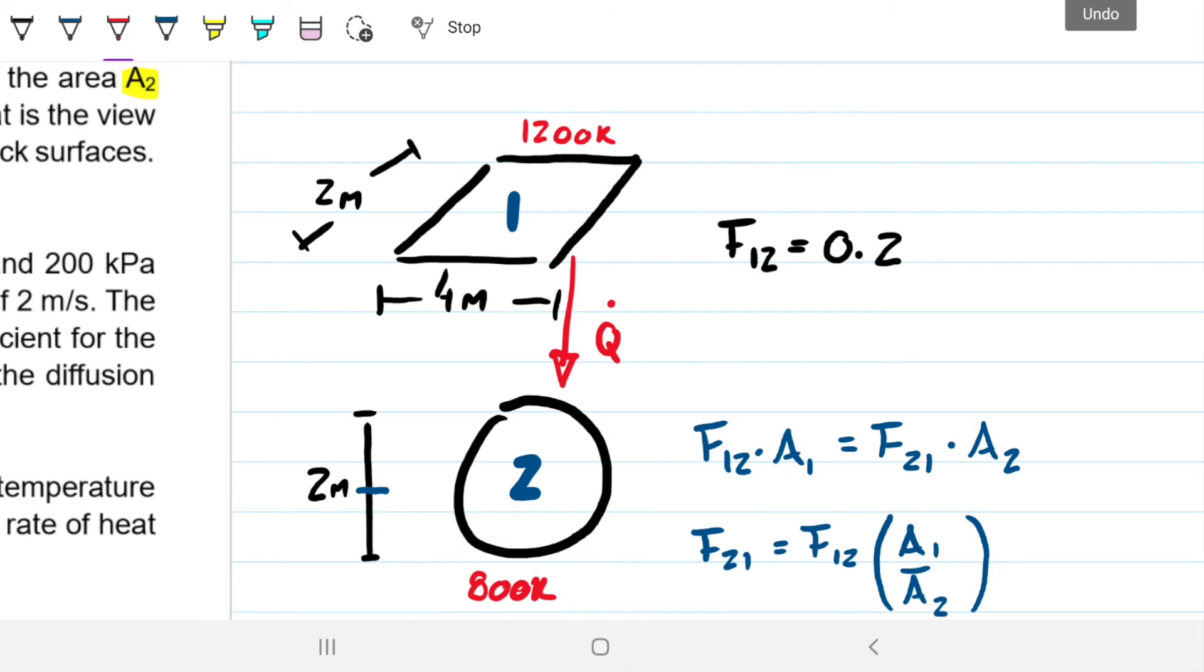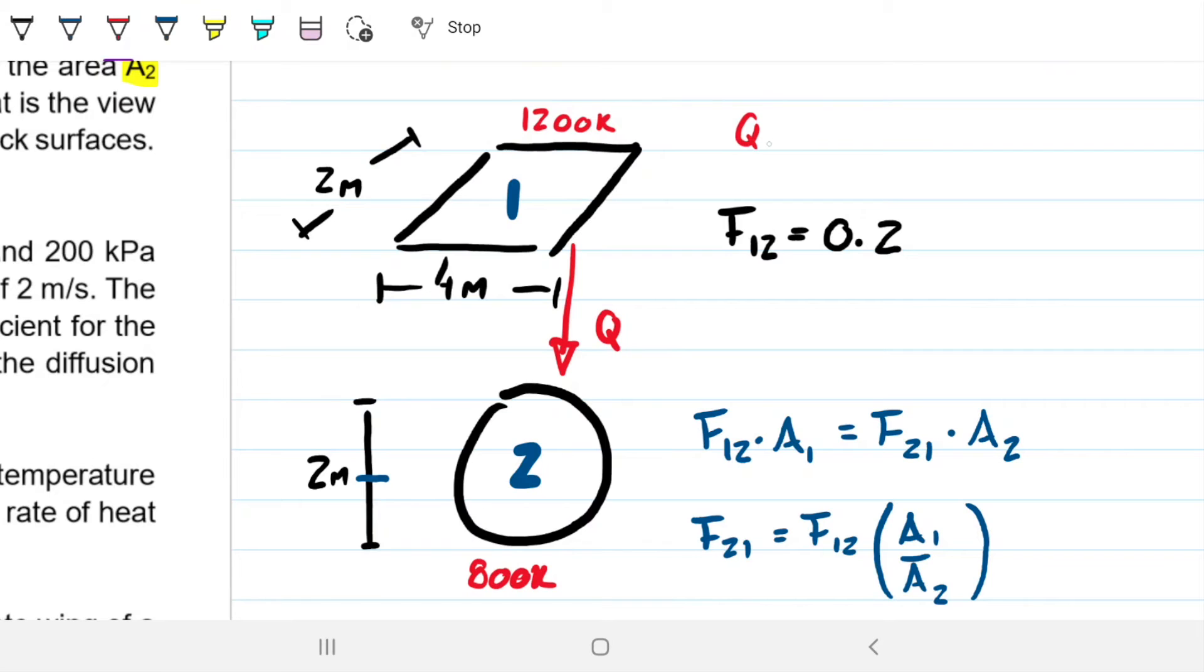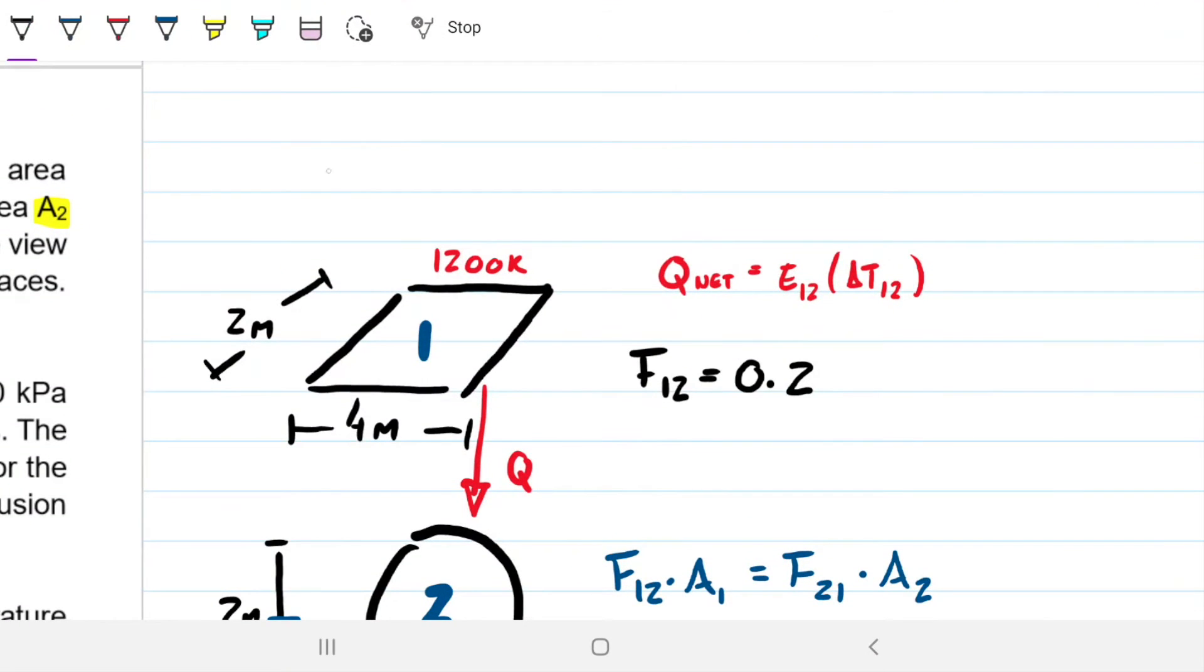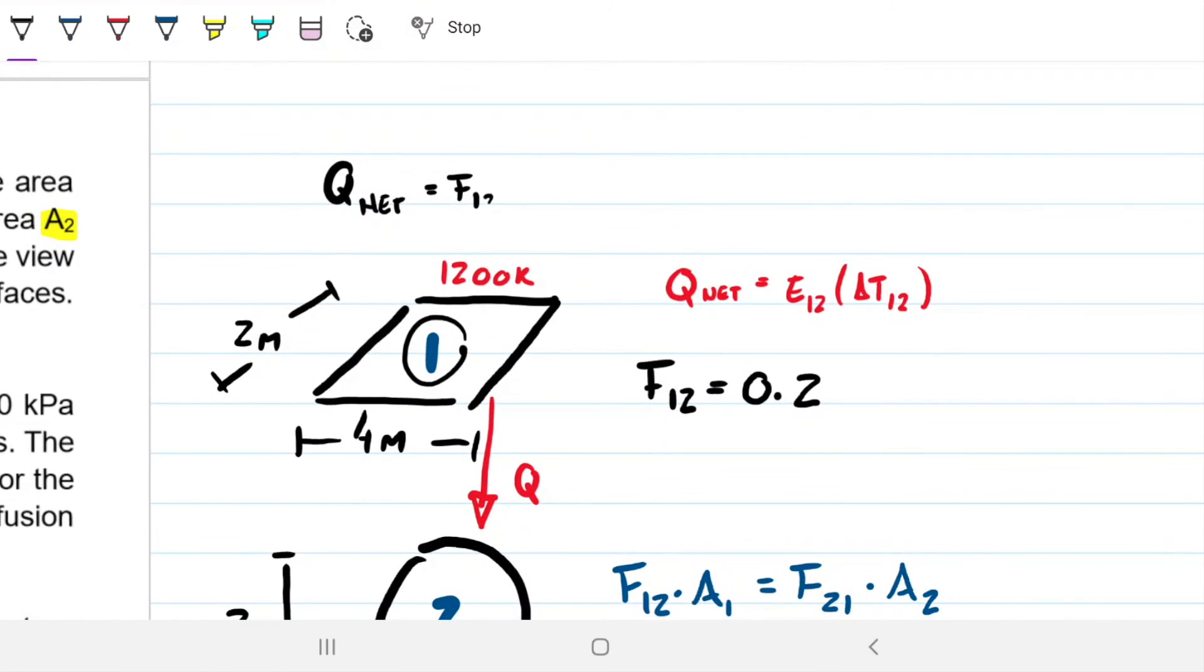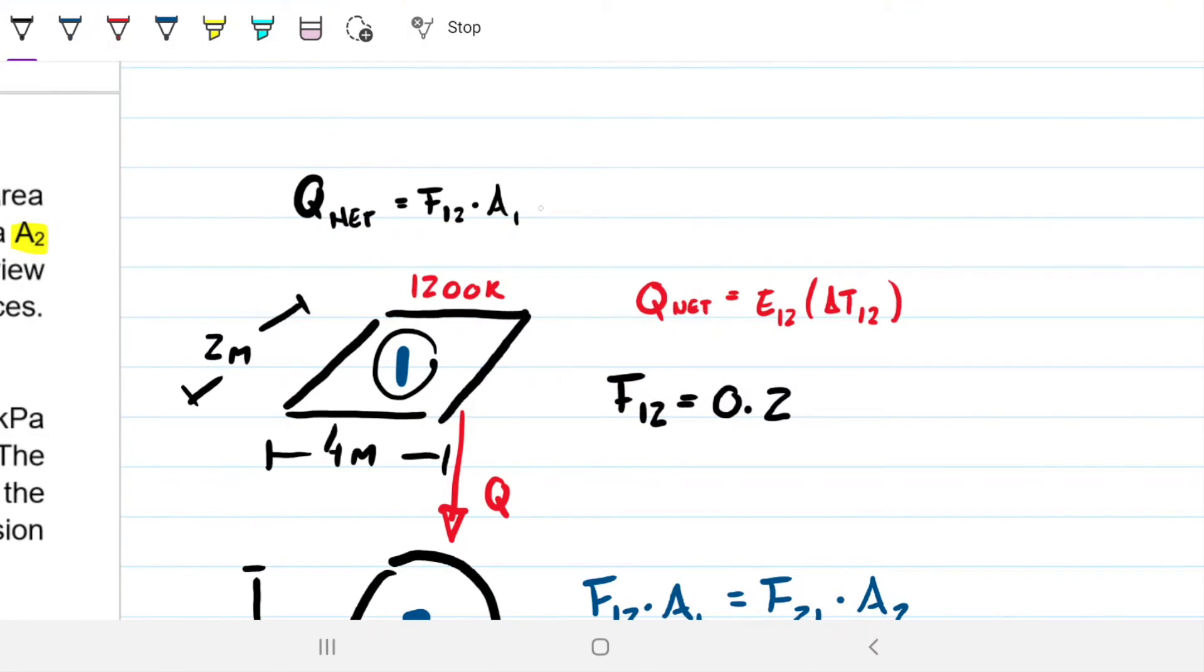The difference in temperature is to the fourth in this case between the 1200 and the 800. So if we want to know q net, we can do what is the energy leaving one and reaching two minus what's the energy of two reaching one. Or we can go straight into q net equals the energy going from one to two. And the difference in temperature between one and two. Then q net will just be the view factor F12 times area A1, how much energy is proportional to the surface area, and then our constant to transform the difference in temperature from Kelvin into energy.